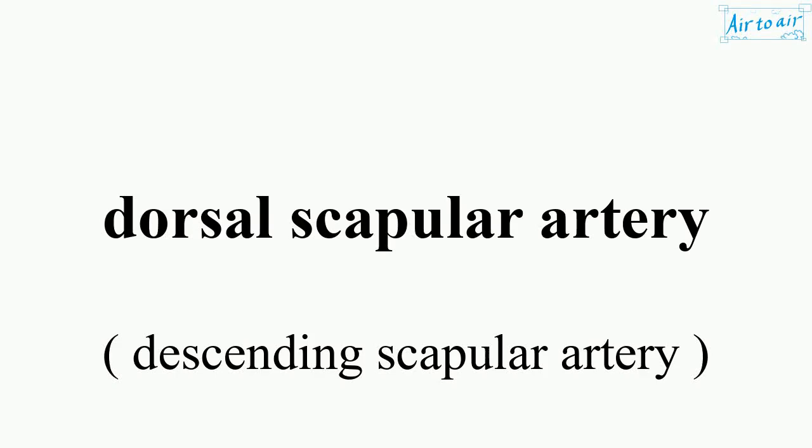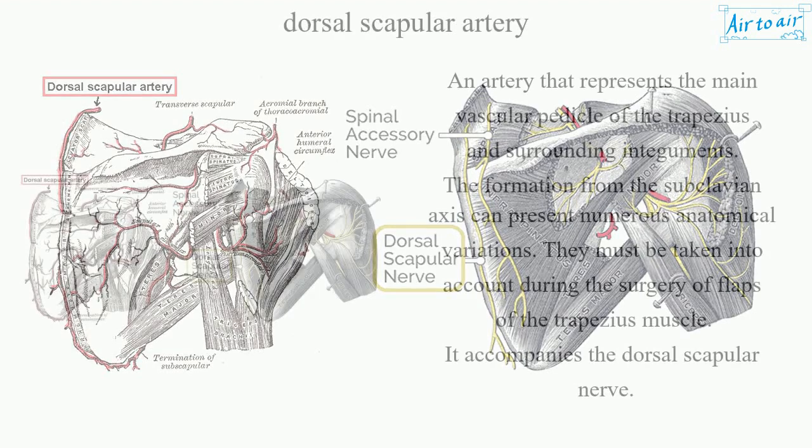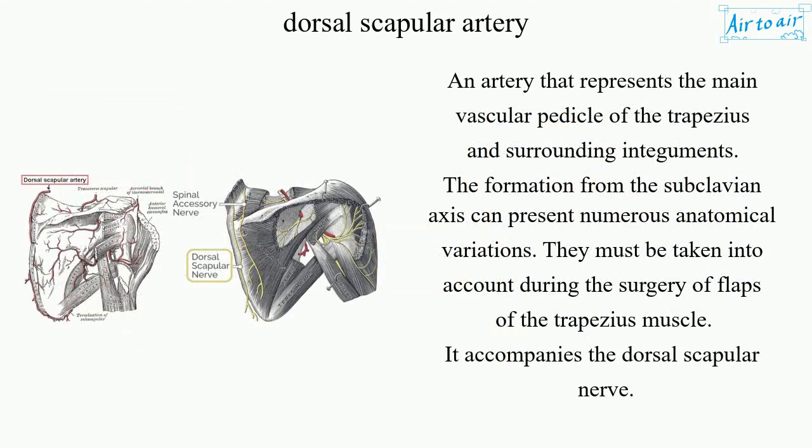Dorsal Scapular Artery. An artery that represents the main vascular pedicle of the trapezius and surrounding integuments. The formation from the subclavian axis can present numerous anatomical variations.